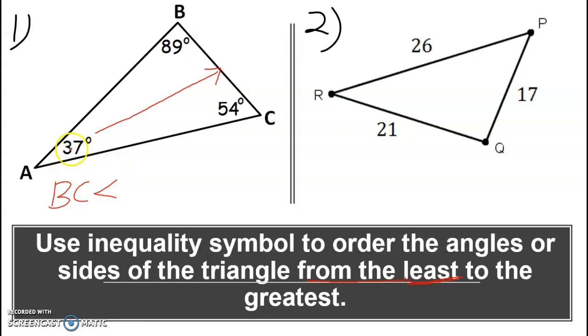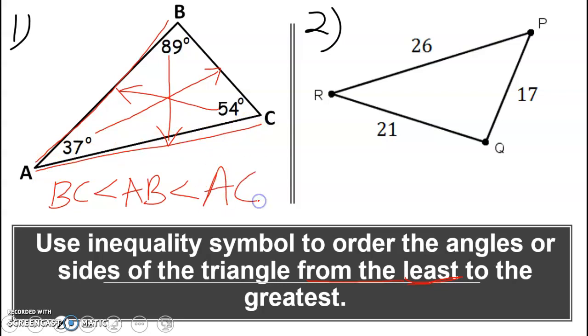After angle 37, which one follows? 54 is the second. So 54 is opposite side AB. So AB is going to be next, which is less than, and then the longest is opposite side AC. Side AC is the longest because the angle opposite side AC, which is B, is the largest angle.